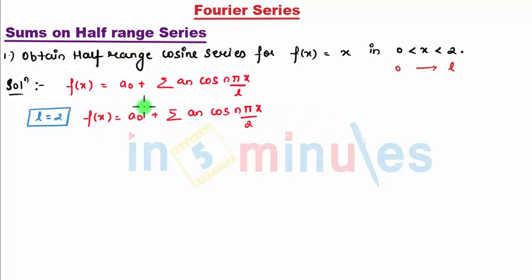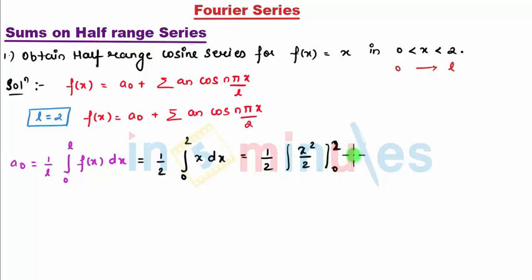Let's find a₀ and aₙ. So I start with a₀. a₀ is given by (1/l) integral from 0 to l of f(x)dx, which is (1/2) integral from 0 to 2 of x dx. This comes to (1/2)[x²/2] from 0 to 2, which I get as (1/4)(4-0), which comes to be 1. So that's my a₀.